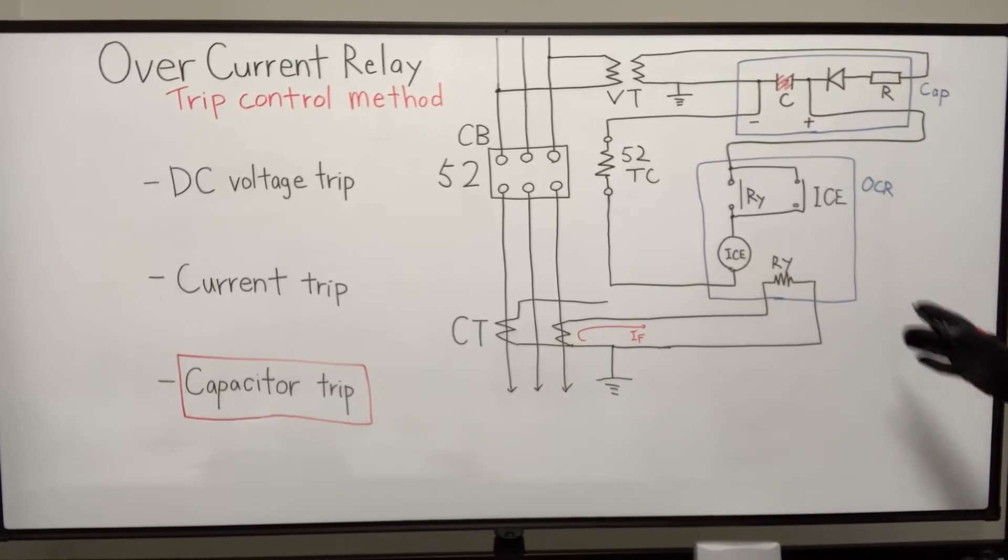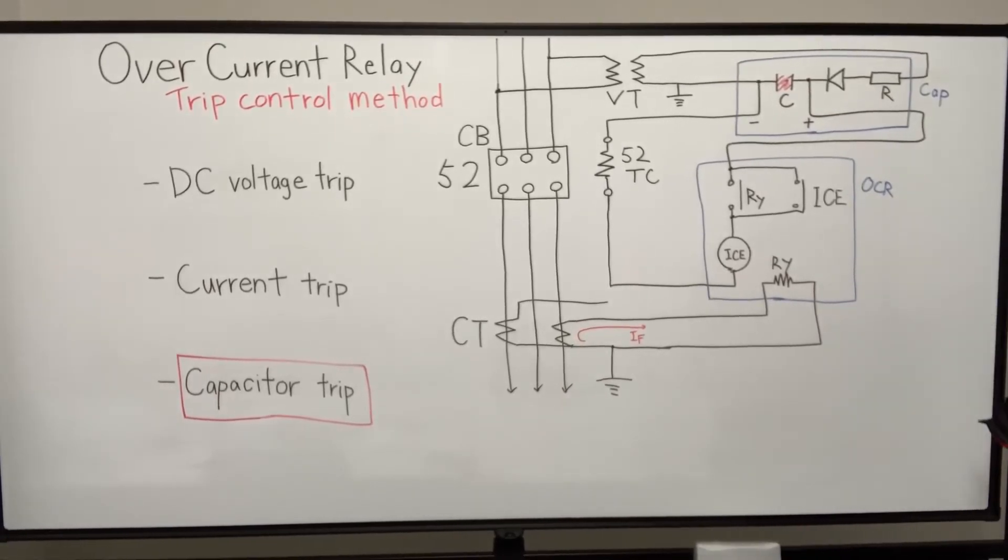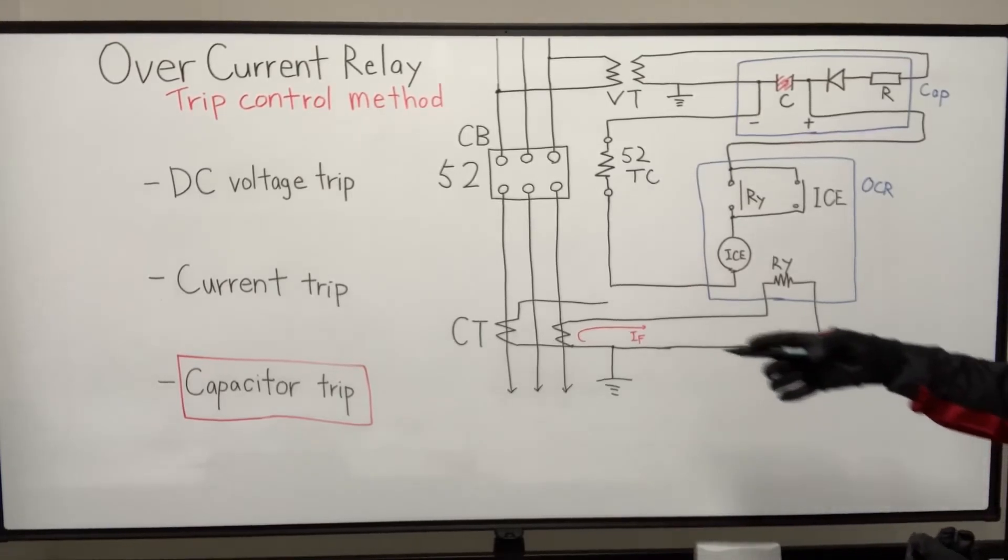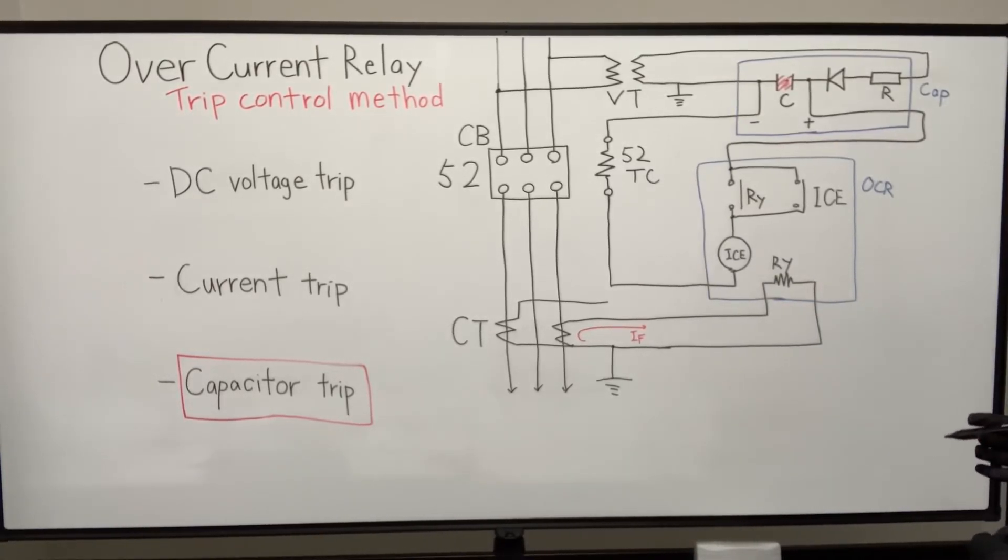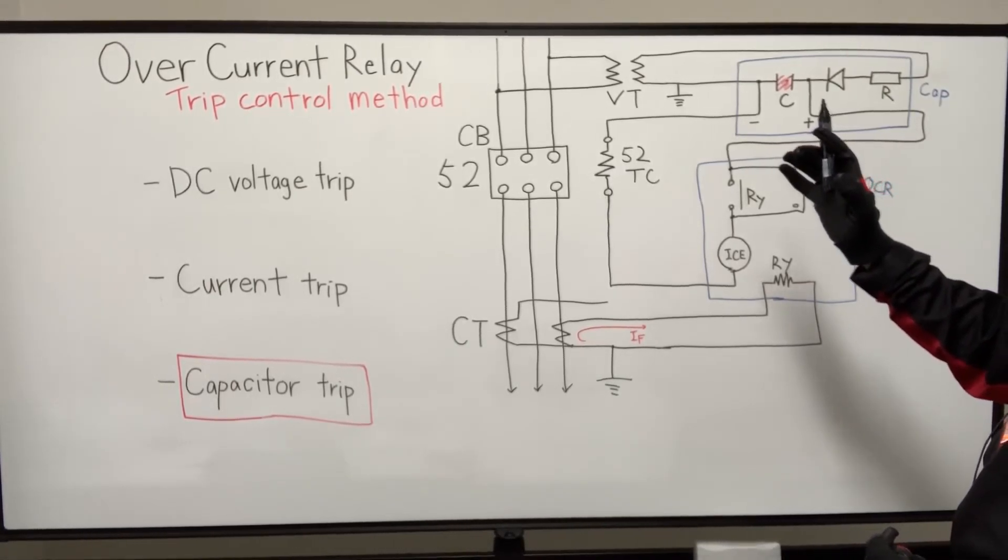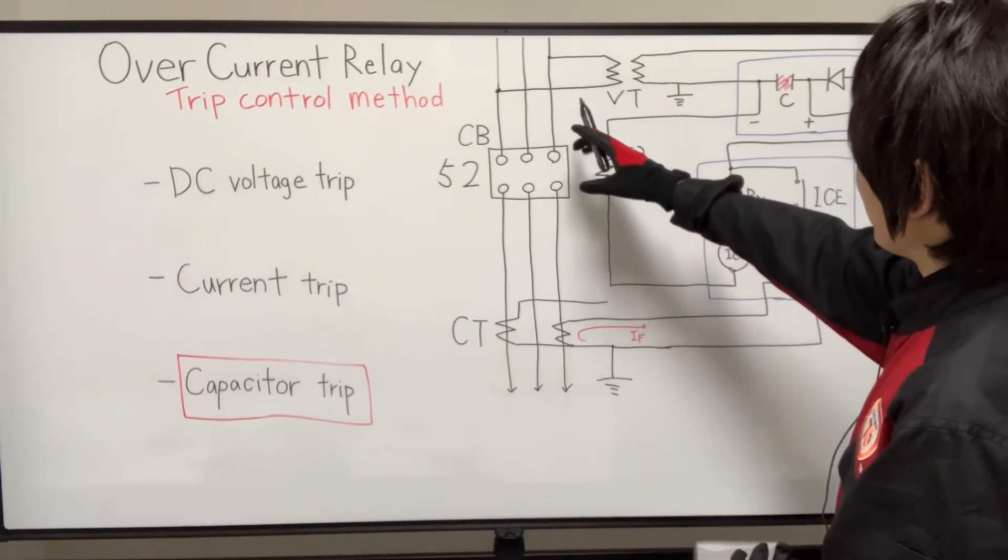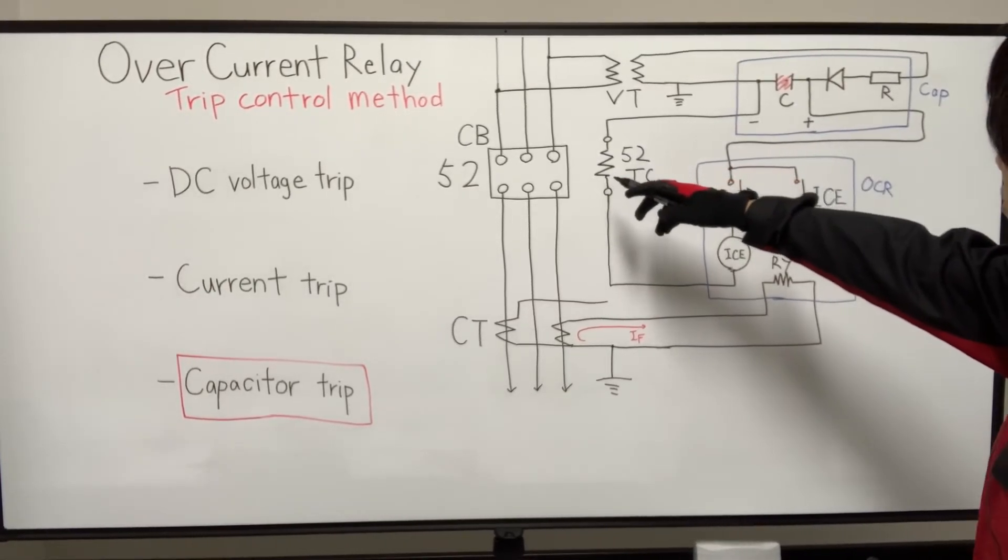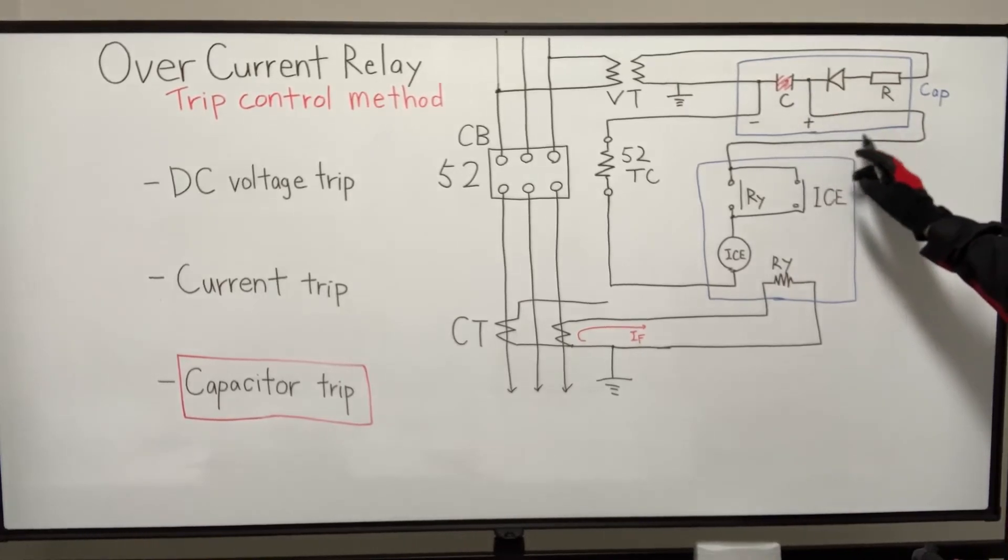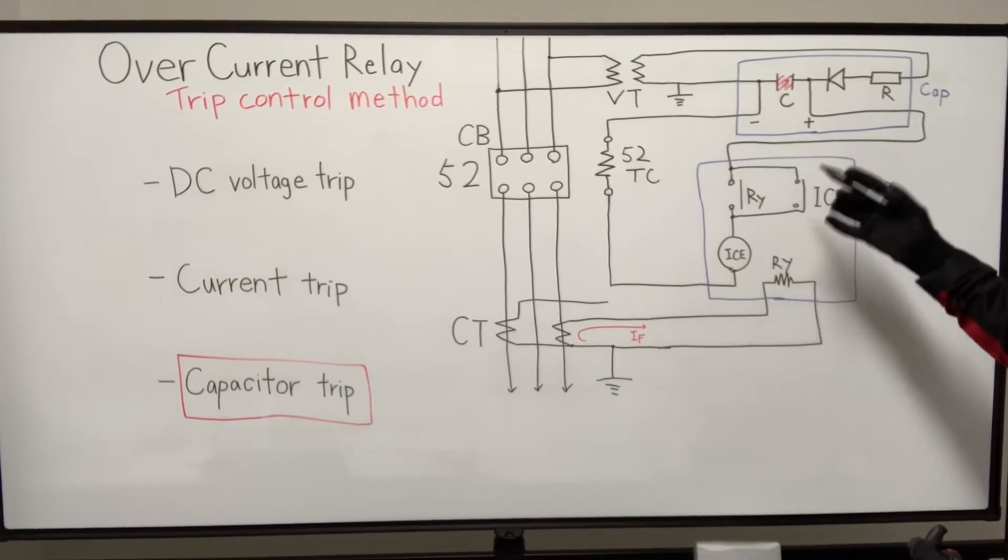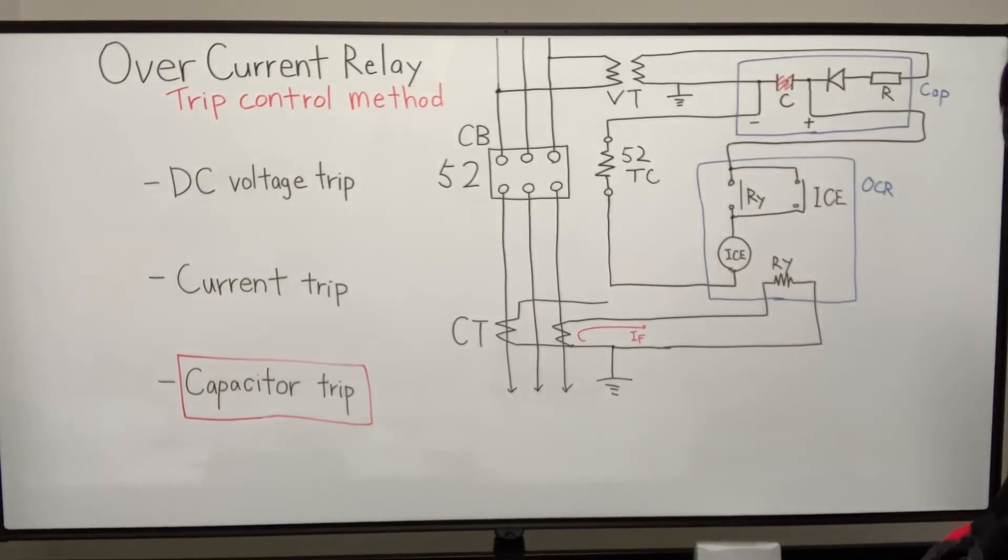And in this manner, there are no need to install some external power supply. So it's cheaper, relatively cheaper, like compared to DC voltage trip. And also, if the power outage happens at the main power system, it still has the capability of tripping circuit breaker by using this charge of the capacitor, one time or several times, as long as this charge of the capacitor exists.